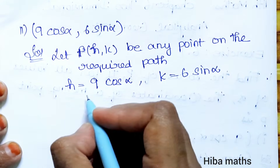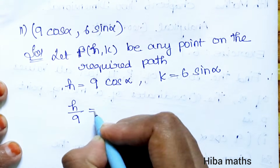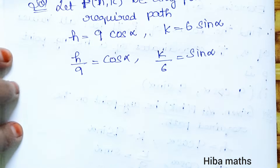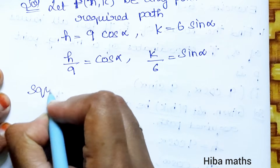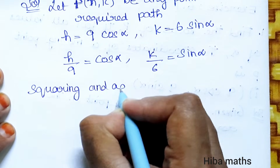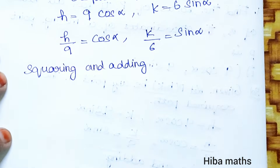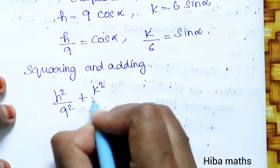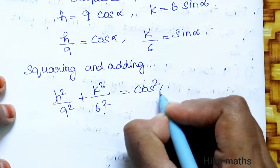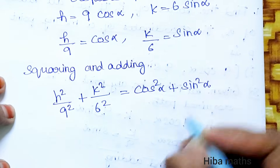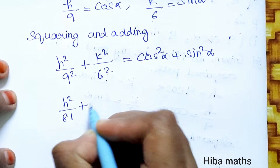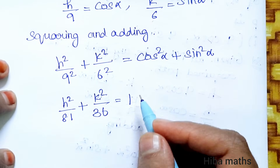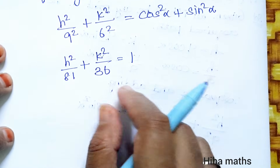Comparing coordinates: K equals 6 sin alpha. So H divided by 9 equals cos alpha, and K divided by 6 equals sin alpha. Squaring and adding: H squared by 9 squared plus K squared by 6 squared equals cos squared alpha plus sin squared alpha. Therefore H squared by 81 plus K squared by 36 equals 1.